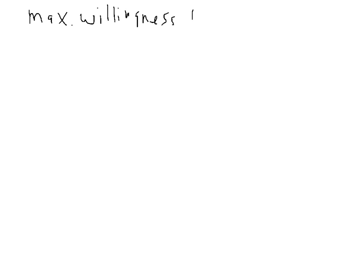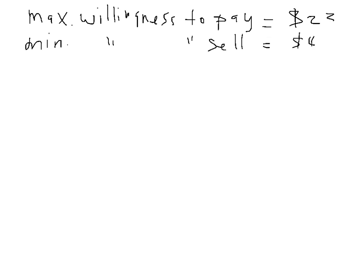Let's draw a graph and calculate consumer surplus and producer surplus for perfect competition. The consumer's maximum willingness to pay is $23, the producer's minimum willingness to sell is $4, the equilibrium price under perfect competition is $12, and the equilibrium quantity is 100 units.